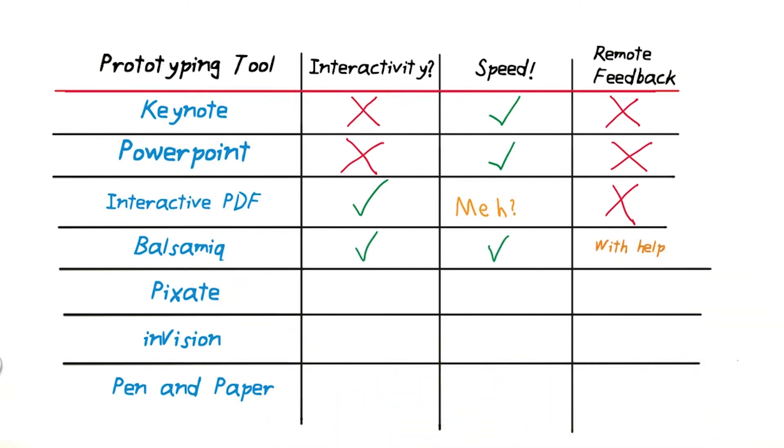Balsamiq, with a q, is one of the faster prototyping tools, which allows for easy iteration, but doesn't have built-in remote feedback tools. Some people combine Balsamiq with a user testing framework to handle that portion.